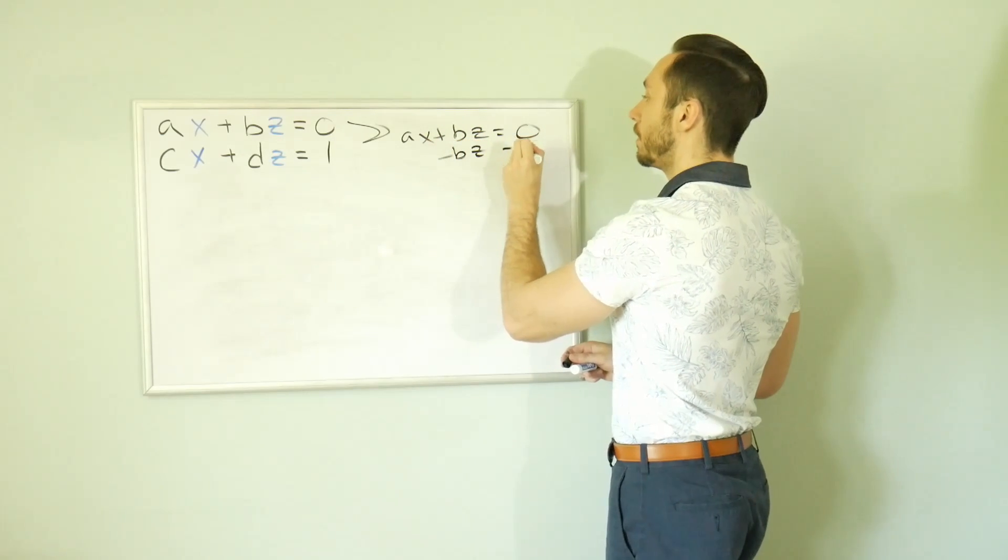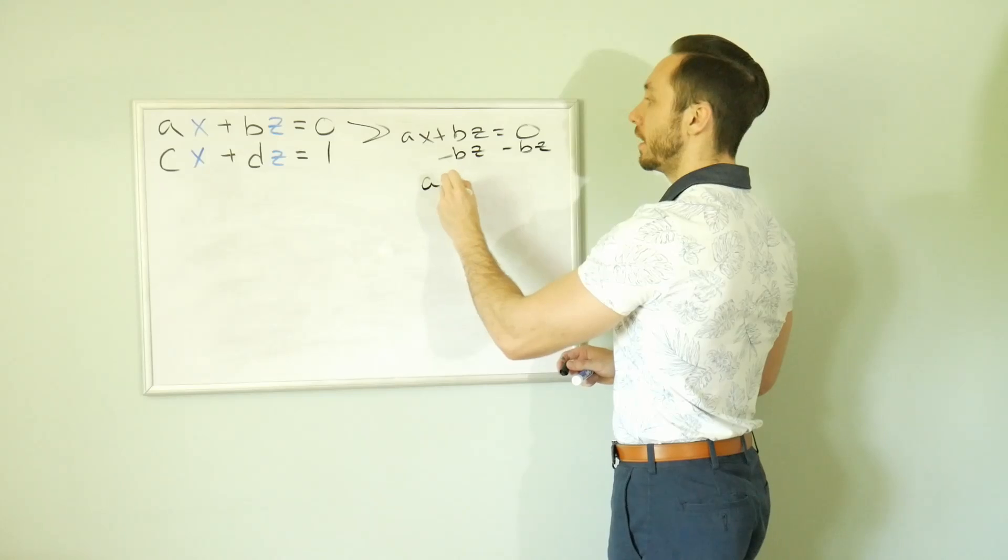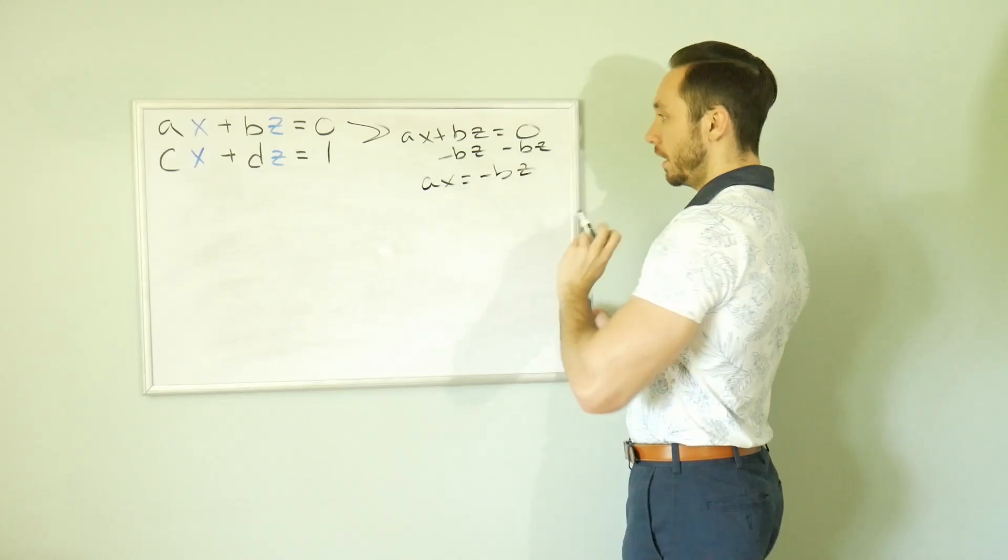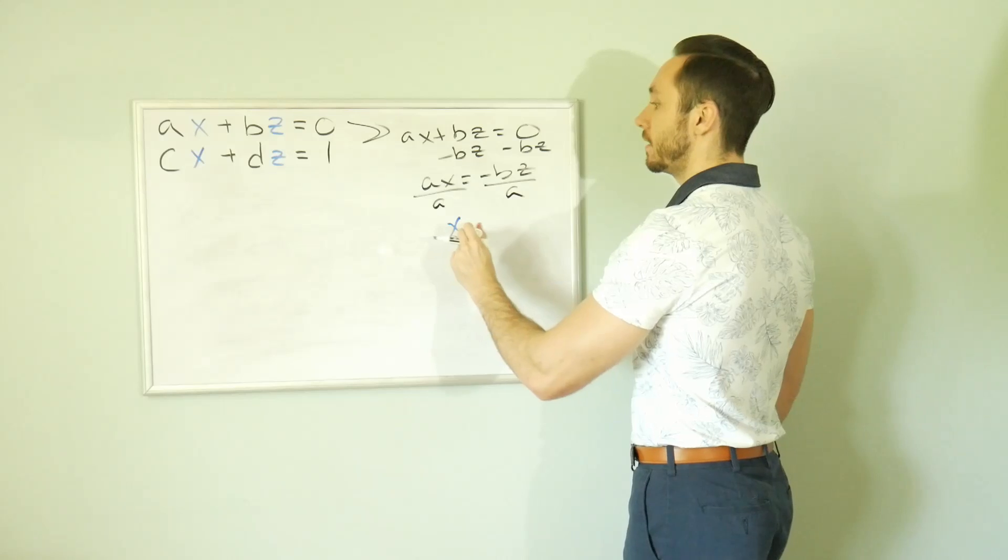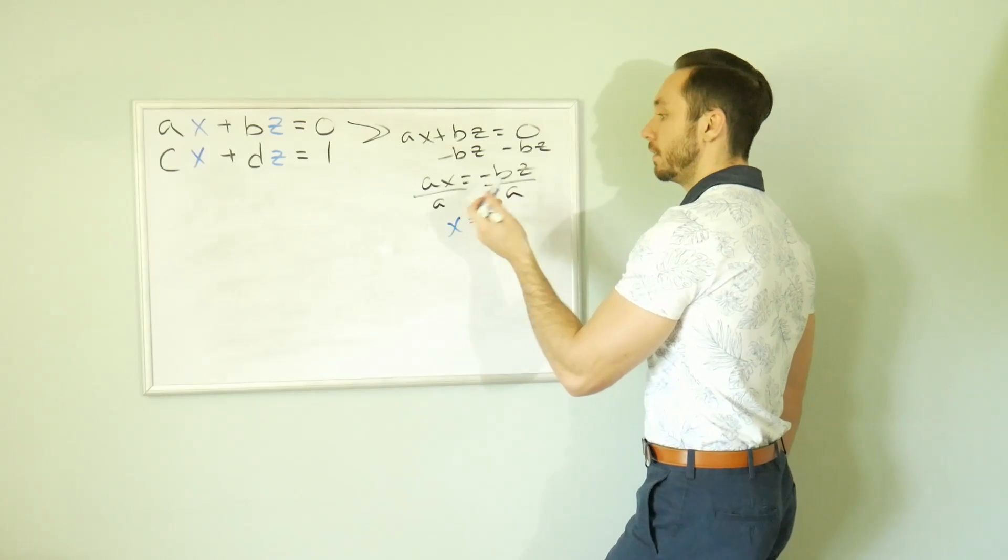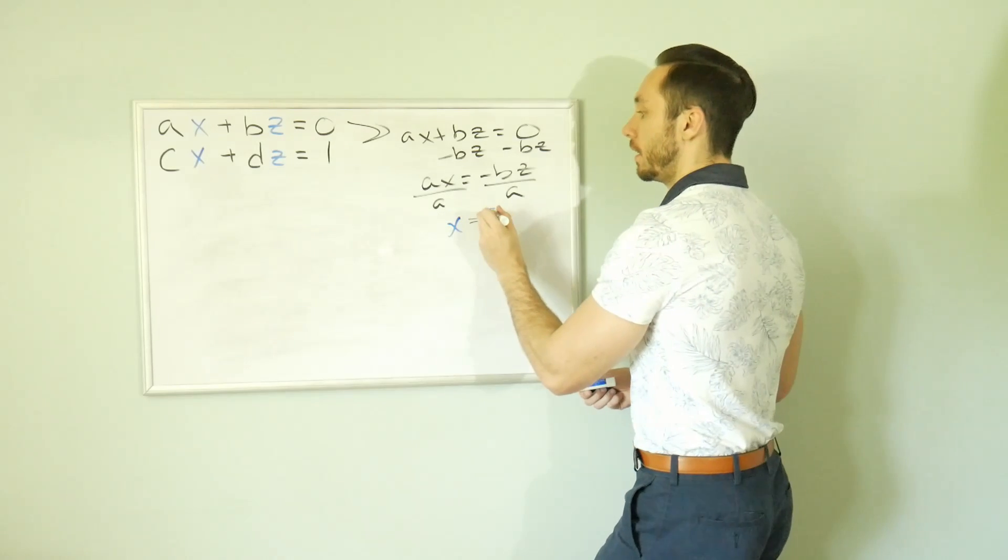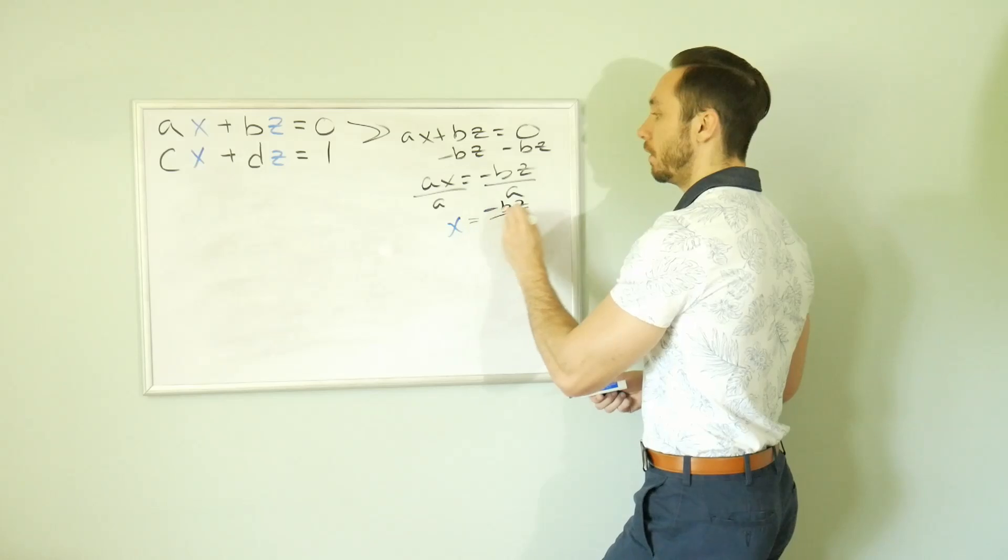Subtract the BZ from both sides. We get AX is equal to negative BZ. And then lastly, divide A out on both sides. So you're going to get X is equal to negative BZ over A.